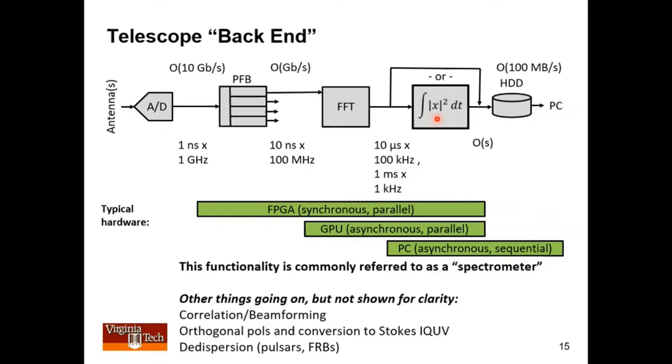So even big continuum measurements over large bandwidths you probably end up doing this kind of channelization because it gives a lot of advantages. Having the finest possible time frequency resolution you can record is of great benefit for a lot of reasons. Interference mitigation being one of them.